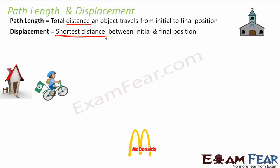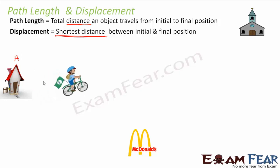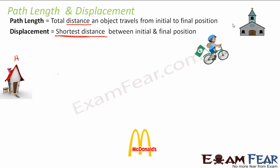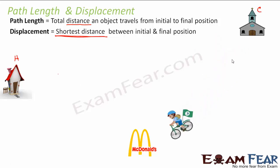Let us take an example. We have a small boy on his cycle. His initial position is at his home — he is at rest. Now he starts moving. He goes from his house to a church. Then from the church, he comes to McDonald's. So the boy was changing his position with time — first from home he reached the church, then from the church he reached McDonald's.